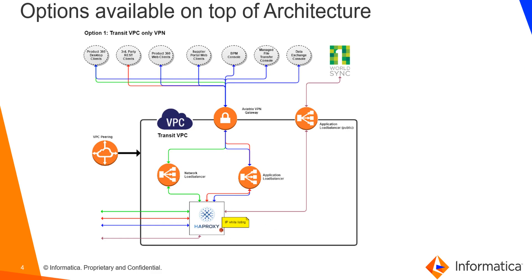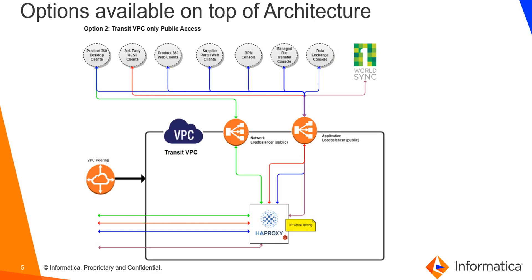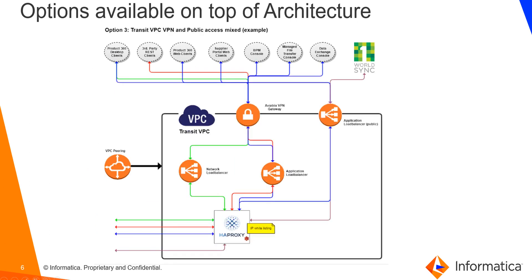Option 2 is transit VPC with public access only. In this case there is no VPN connectivity. Instead, the network load balancer is exposed publicly and traffic is routed either directly to P360 or via HAProxy for IP whitelisting. When a gateway is used as in Option 1, whitelisting happens at the gateway level, but with public access, IP whitelisting is done only at the HAProxy level.